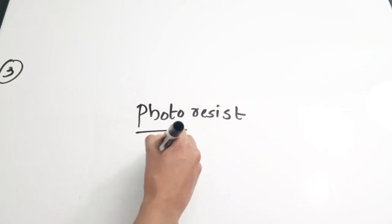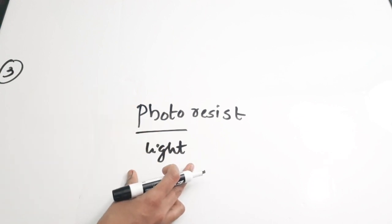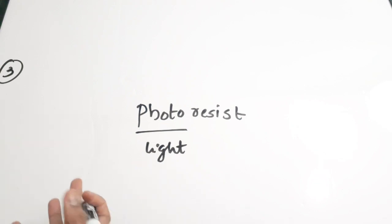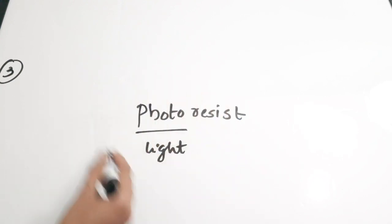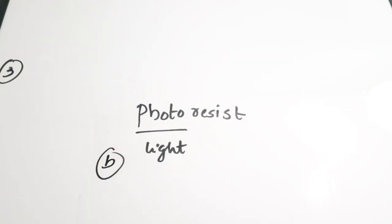From the term itself — photoresist — photo means light, as in photosynthesis. Resist means resisting the light. This can be either positive photoresist or negative photoresist. Positive and negative photoresist have two different qualities: one will get dissolved in the presence of light, and one will get harder in the presence of light. It is related to light sensitive polymer. Correct answer is option B.